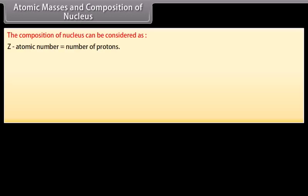The composition of nucleus can be considered as: Let Z be atomic number, which is equal to number of protons. Let N be neutron number, which is equal to number of neutrons. Let A be mass number, which is equal to Z plus N, which is equal to total number of protons and neutrons.